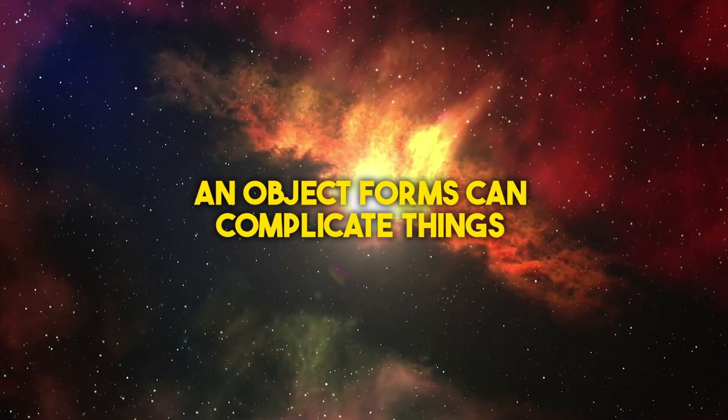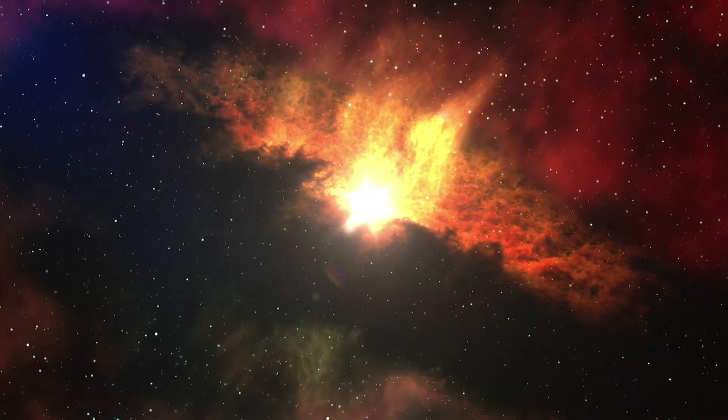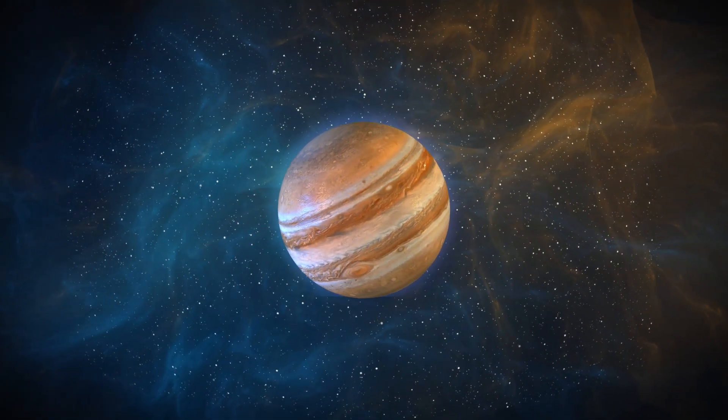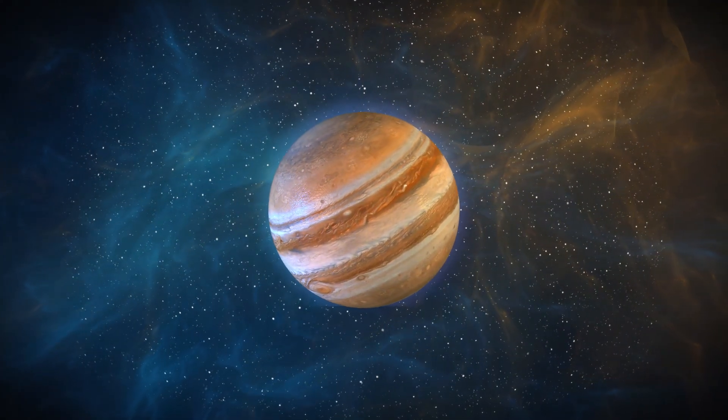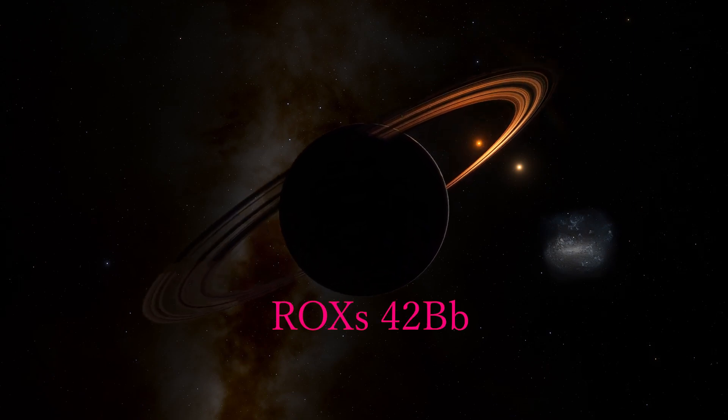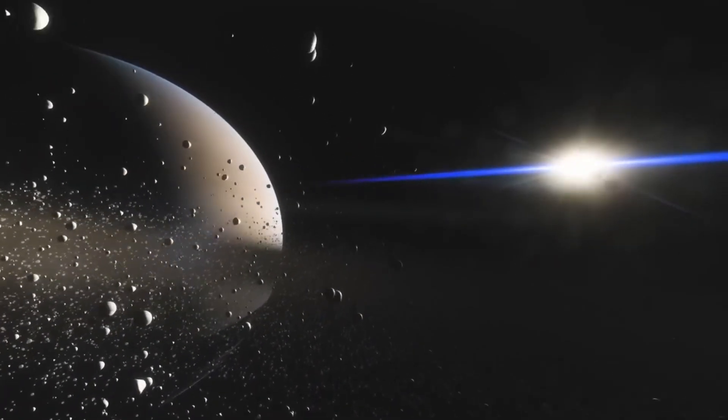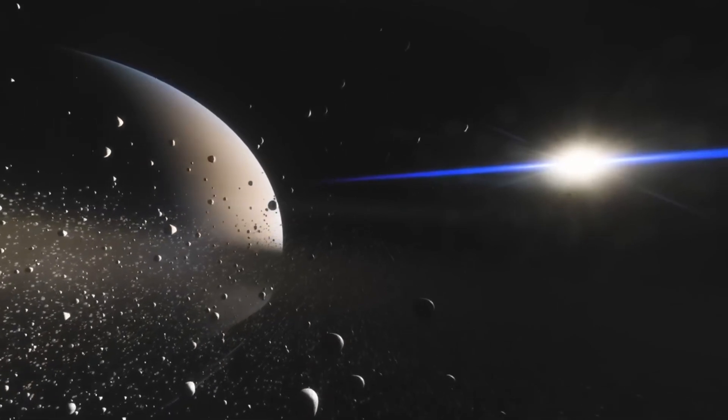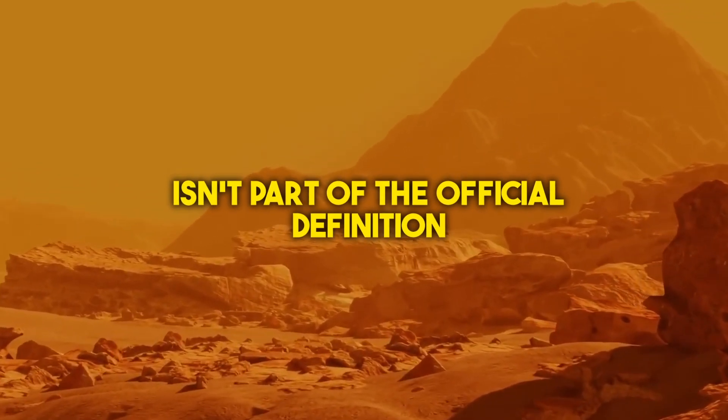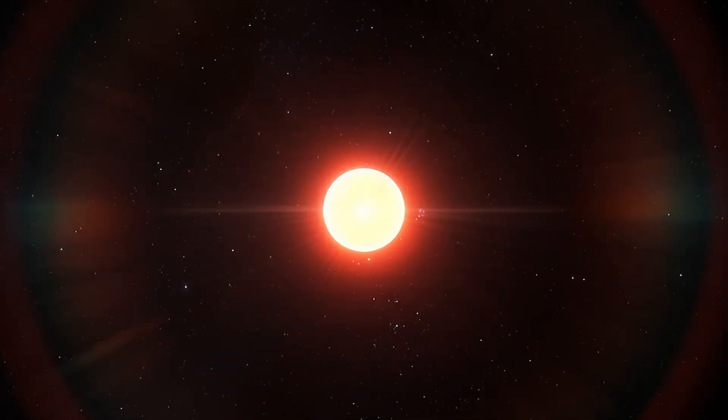Curry also points out that how an object forms can complicate things. Planets like Jupiter typically form by accumulating a rocky core that attracts gas and dust. ROXs 42Bb, however, might have formed more like a star with parts of a massive gas and dust disk collapsing under their own weight. This formation method isn't part of the official definition of a planet, which is why some scientists call these massive objects sub-brown dwarfs.